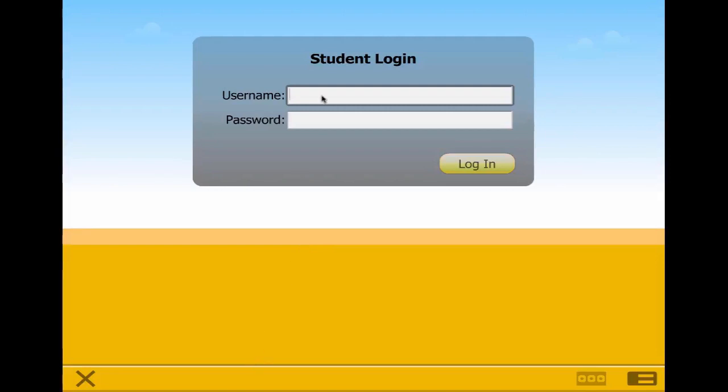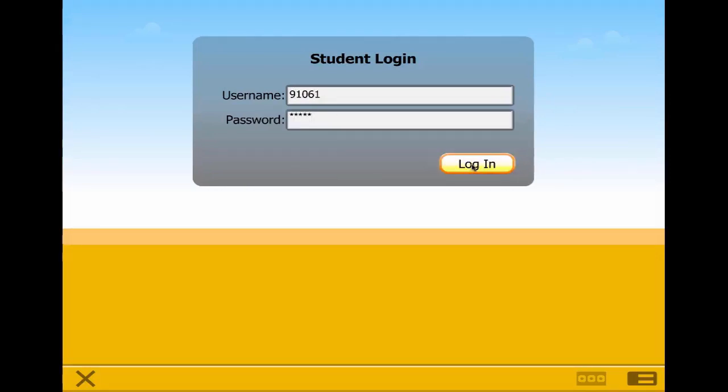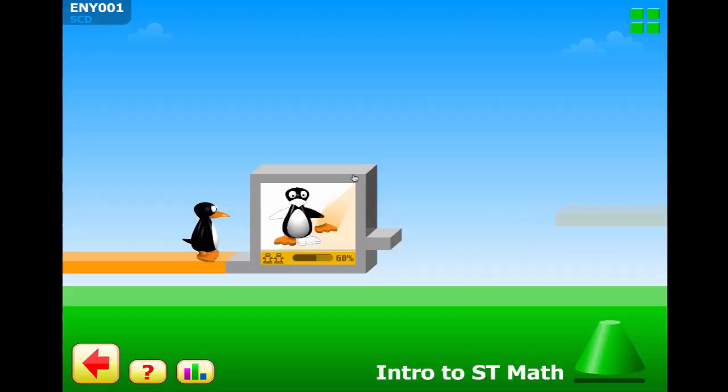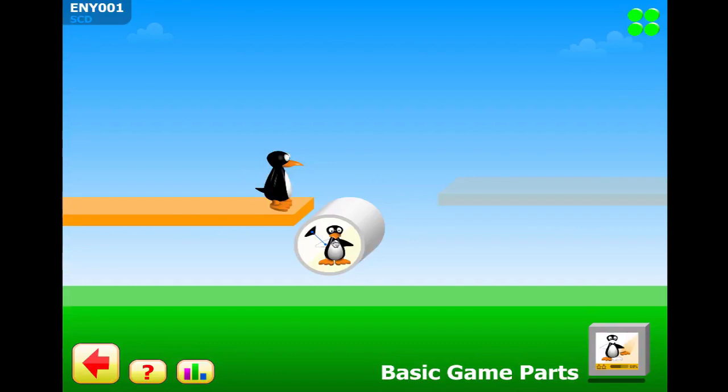You will know when a student has successfully logged in when you see a gray cone on the screen. These cones are ST Math content objectives. In ST Math students should always play the gray. Any level they have not completed will be the color gray. Watch as this student plays the gray.